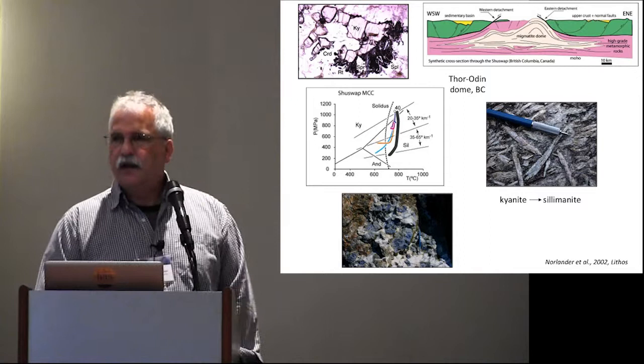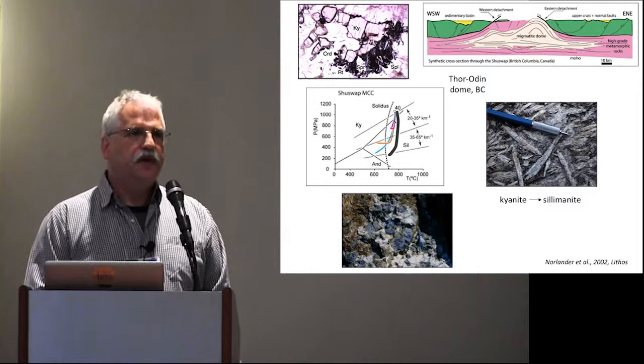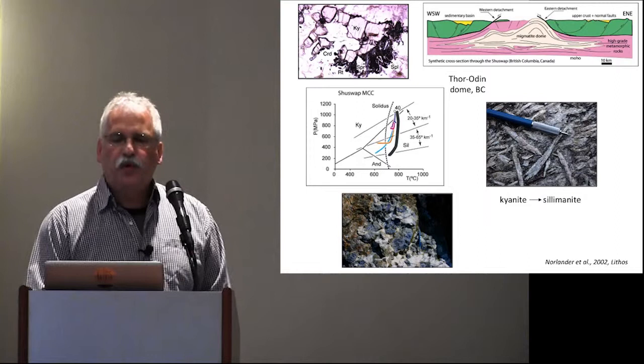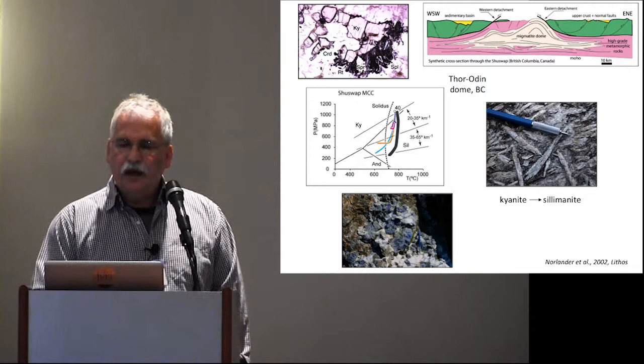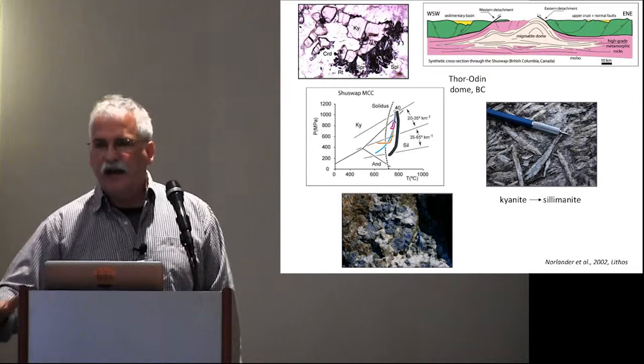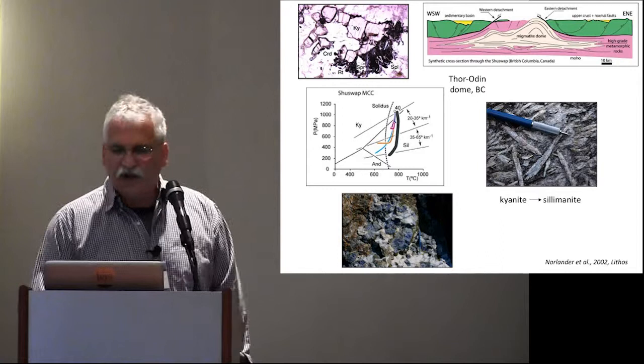When we look at the metamorphic assemblages in those rocks, we find a lot of evidence of decompression. This has been found in all of the migmatite domes, where, for example, kyanite is replaced by symplectites of sapphirine, spinel, and so on, indicating a disequilibrium texture. This rock was at depth at high temperature and then was decompressed very rapidly, leading to these disequilibrium textures.